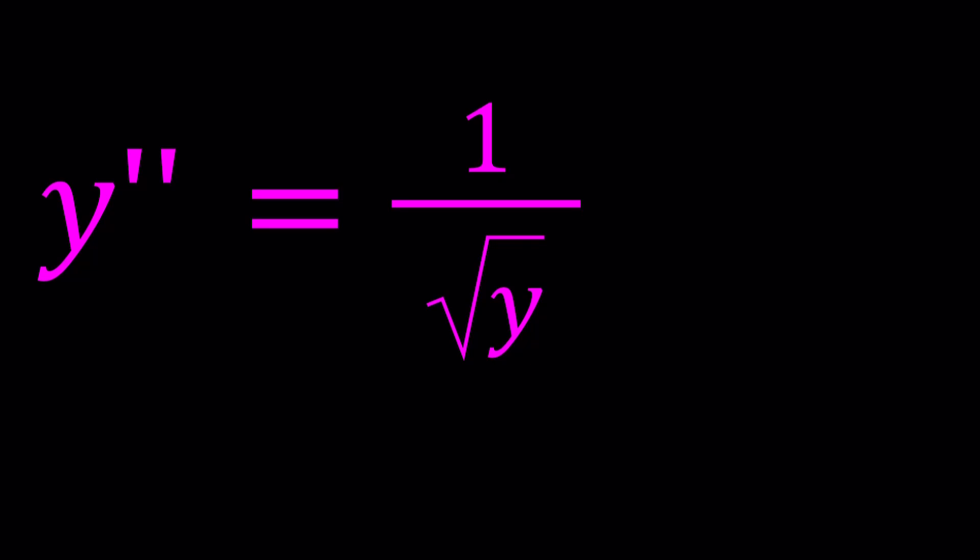First of all, I want to multiply both sides of this equation by something. Not cross-multiply, don't get me wrong. I'm not trying to multiply both sides by square root of y to get y double prime times the square root of y equals 1. That's called cross-multiplication. Is that going to help us? It should, if you use substitution and do a couple different things. But here's what I want to do instead.